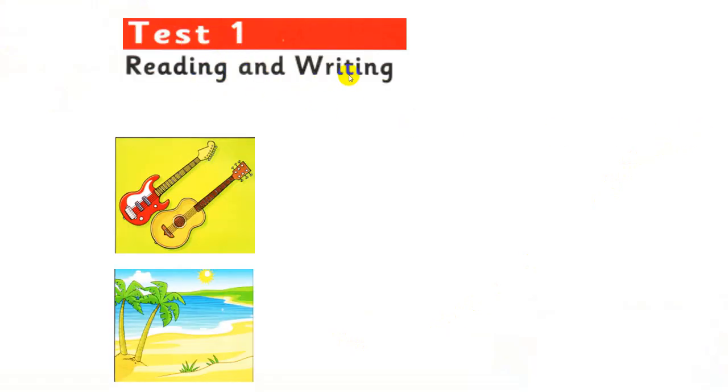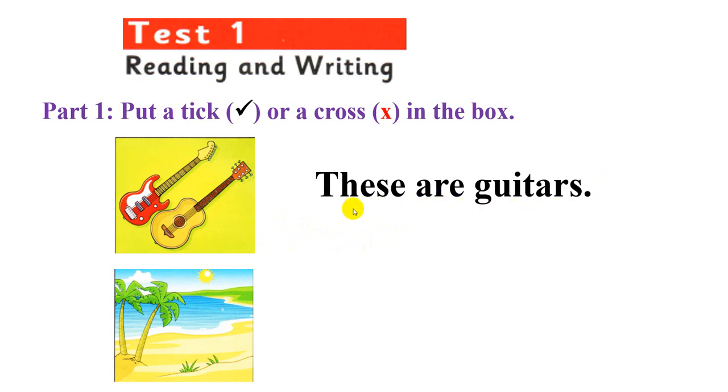Test one, Reading and writing. The first one, part one. Put a tick or a cross in the box. You look at this picture. These are guitars. You put a tick or a cross. That's right. So you put a tick.